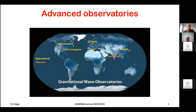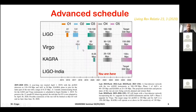We now have two LIGO interferometers in operation, Virgo in Italy (a French-Italian and broader European collaboration), KAGRA which just started taking data at the end of the last run, LIGO India which is planned, and GEO in Germany which is also used to test prototypes for improvements to the other detectors.